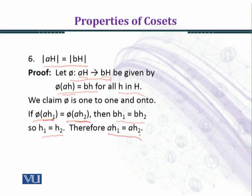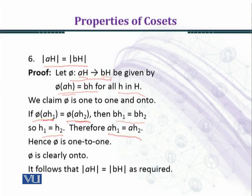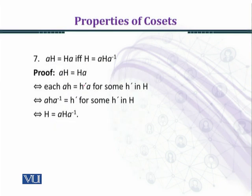So we have proved phi(Ah₁) equals phi(Ah₂) implies Ah₁ equals Ah₂. Now we check whether phi is onto or not. The pre-image of every element Bh in the co-domain is Ah, and so phi is onto. Therefore the cardinalities of AH and BH are equal, as required.